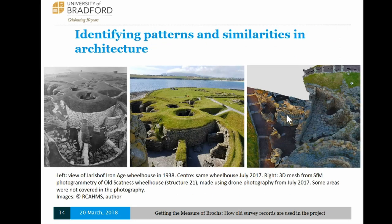I also want to look at similarities between the three different sites. When Structure 21 was excavated at Old Scatness, they found it had a medial wall running all the way through the centre of the roundhouse. This is quite interesting because a very similar feature is shared at Jarlshof. You can see a photo I took last year compared to one taken in 1938 — on the whole the site hasn't changed much at Jarlshof, but it'll be really exciting to look at how the stonework across these two sites is similar and whether you can see similar patterns of stone placement.